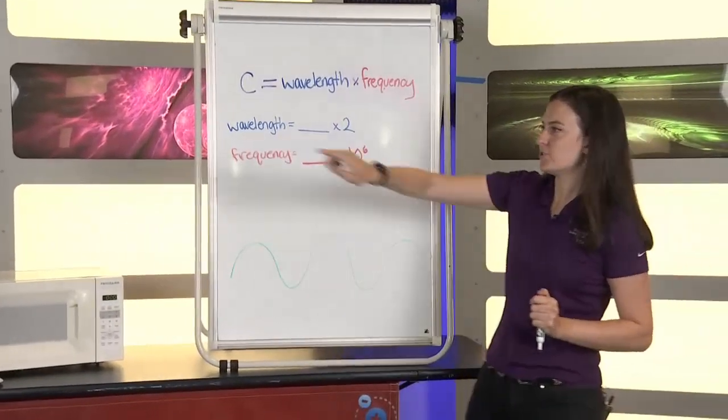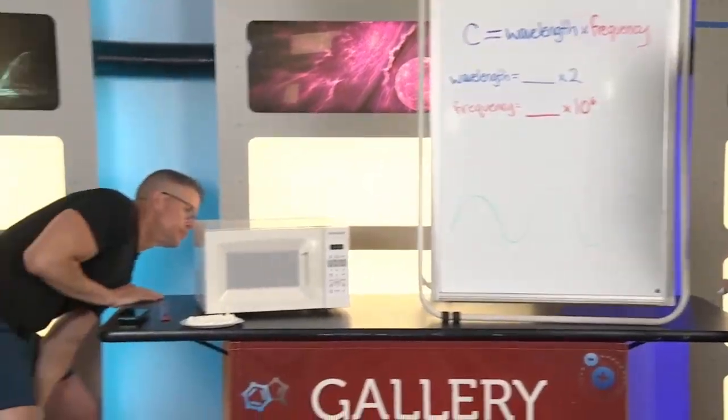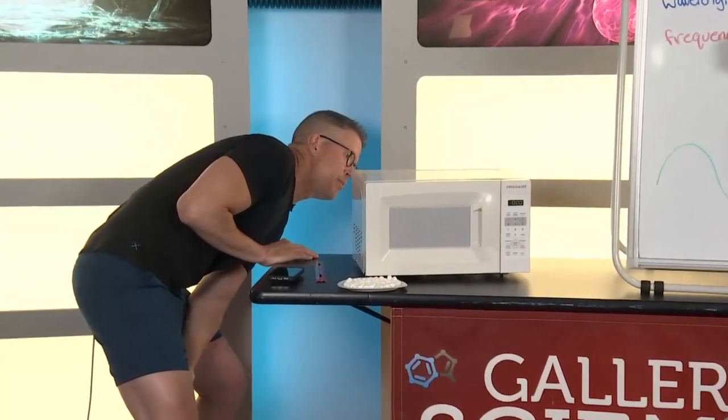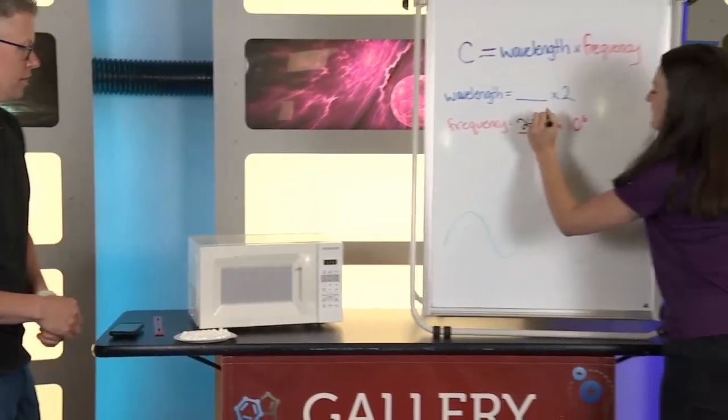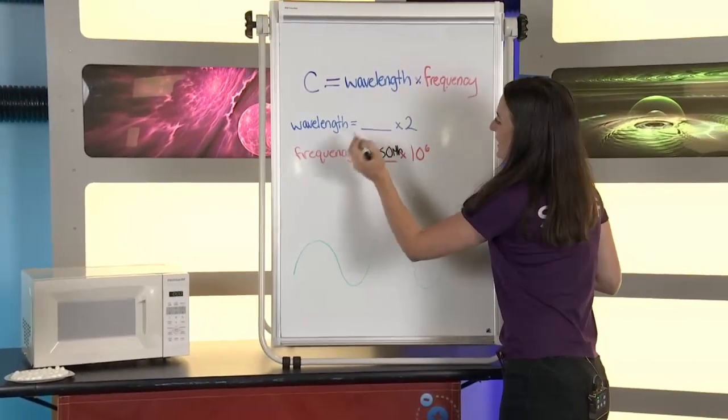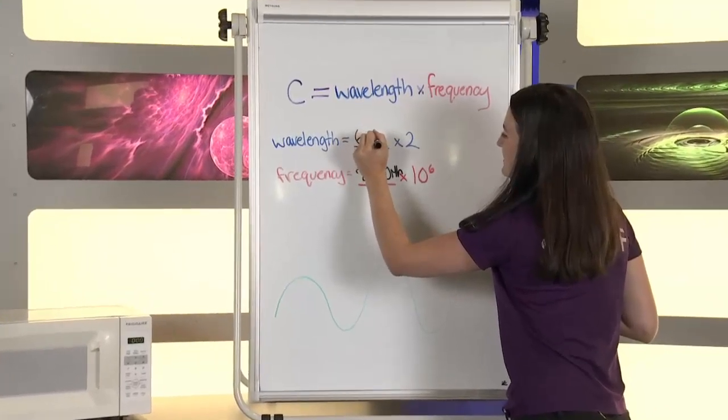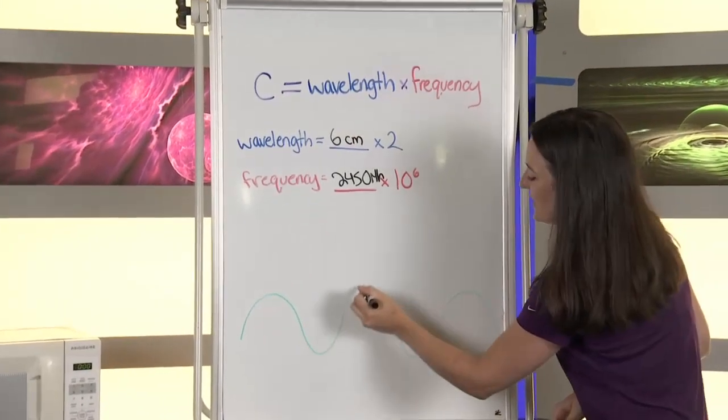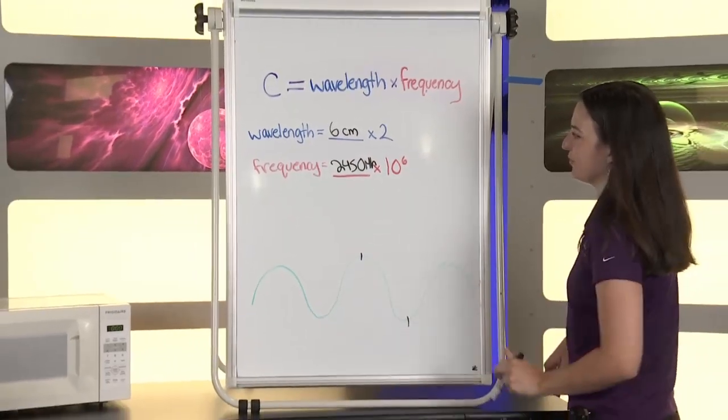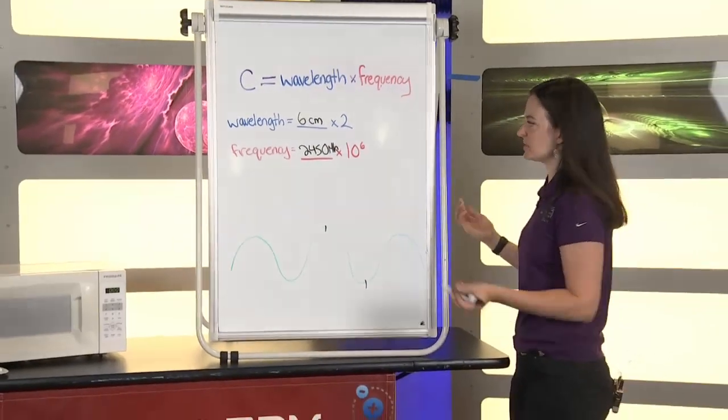All right. So, now we have our wave. We can figure out our wavelength. And we need the frequency of the microwave. So, it should be on the back. Do you see the frequency? Yes. 2450 megahertz. And we said our wavelength was six centimeters.